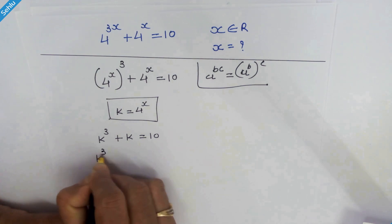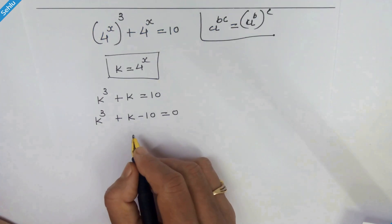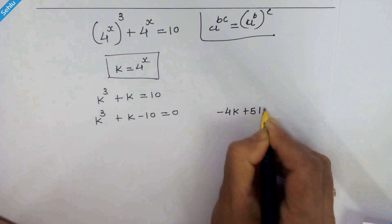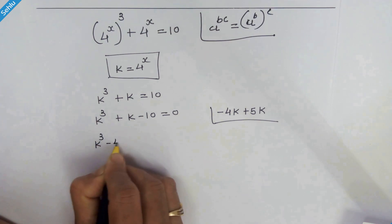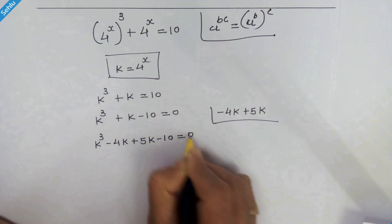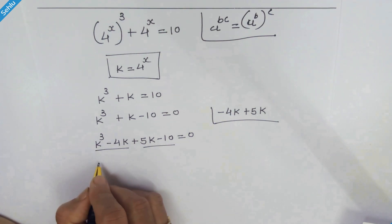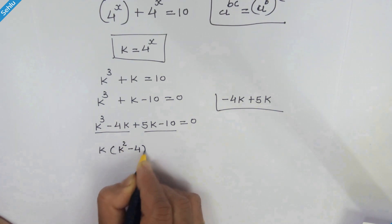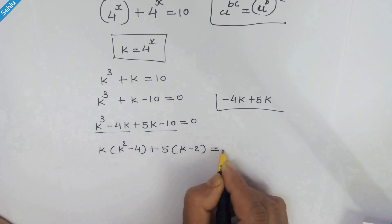Now let's move 10 to the left-hand side, so we have k cubed plus k minus 10 is equal to 0. Now let's rearrange this cubic equation. We will put minus 4k plus 5k in place of k, so it will be k cubed minus 4k plus 5k minus 10 is equal to 0. Now here we will factor out k from the first two terms and 5 from the last two, so we have k times (k squared minus 4) plus 5 times (k minus 2) is equal to 0.